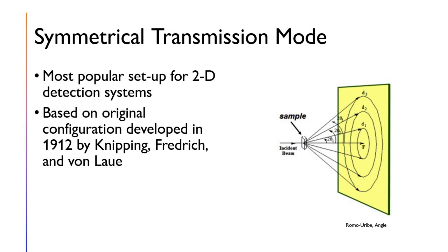One of the more popular setups for wide-angle diffraction is the 2D detection system based on the original configuration developed in 1912 by Knipping, Friedrich, and von Laue, where the sample is held constant and an incident beam is also held constant while striking it, forming the various Laue circles. This is seen in the figure on the right, where you can see the different circles forming the D1, D2, and D3 spacings.